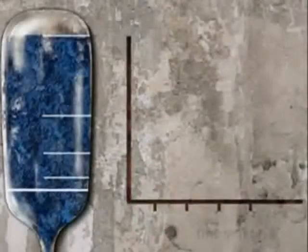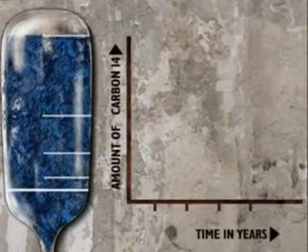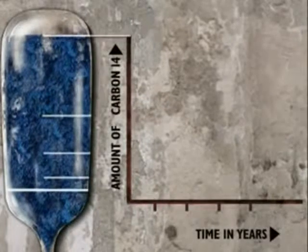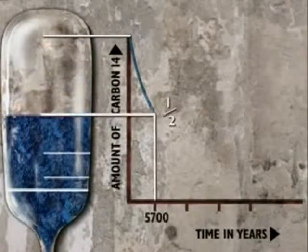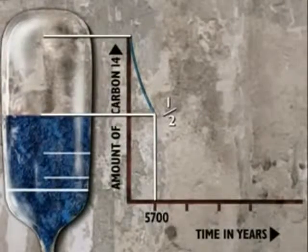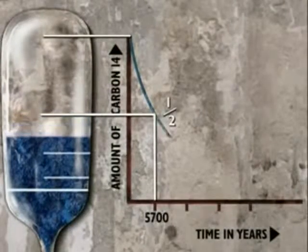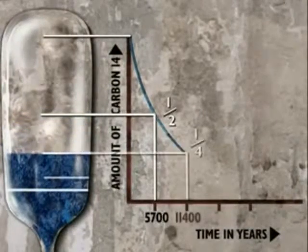If we plot the half-life as a graph, with the amount of carbon-14 on the vertical axis and time on the horizontal axis, it will look like this.